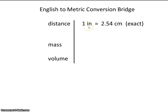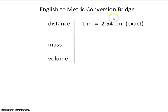For example, one inch — that's the English system — is equal to exactly 2.54 centimeters in the metric system. This is an exact conversion and has an infinite number of significant figures.